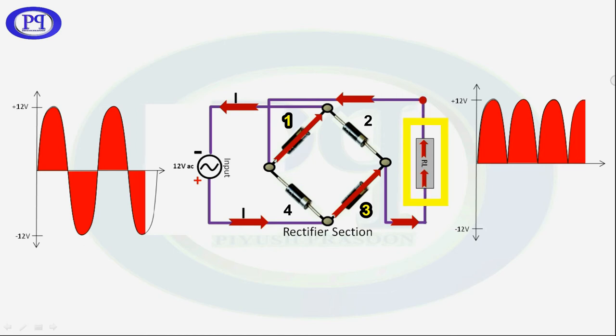Every time current is flowing in the same direction in load resistance RL, and hence we are getting positive waveform every time.